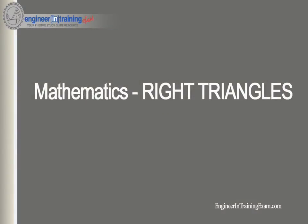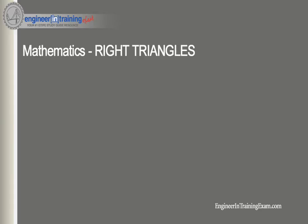Hey, what's going on everyone, it's Justin Dickmeyer from engineerintrainingexam.com. In this video we're going to review right triangles. We're going to learn two basic special right triangles and find ways to define missing sides which we'd be unable to find using the Pythagorean theorem alone. In math and in the real world we occasionally deal with angle measurements in multiples of 30, 45, and 60 degrees, so there are two special right triangles we need to be familiar with to solve exam problems quickly.